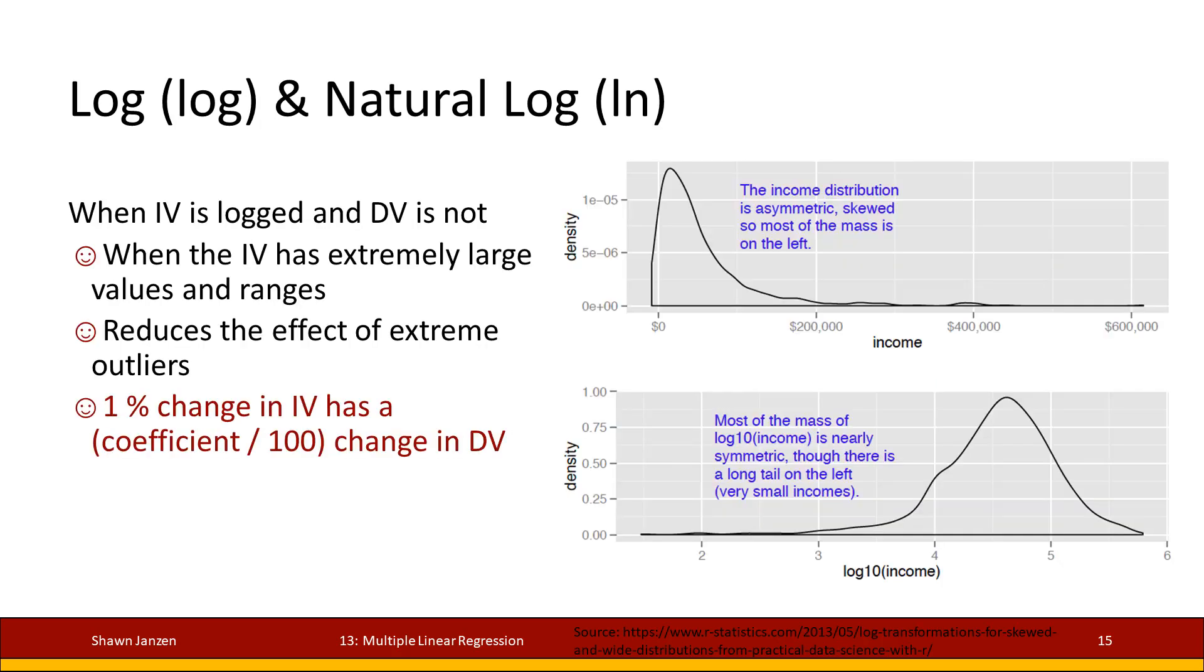Now, keep in mind when you're dealing with logs and natural logs, there's something else we need to take into account. And this is how we interpret these values. When your independent variable is the one that is logged and your dependent is not, it is still as it normally appears. We can do this when the independent variable has extremely large values. It helps reduce the effect of those outliers. And our interpretation changes to say a 1% change in your independent variable has a coefficient divided by 100's change in the DV.